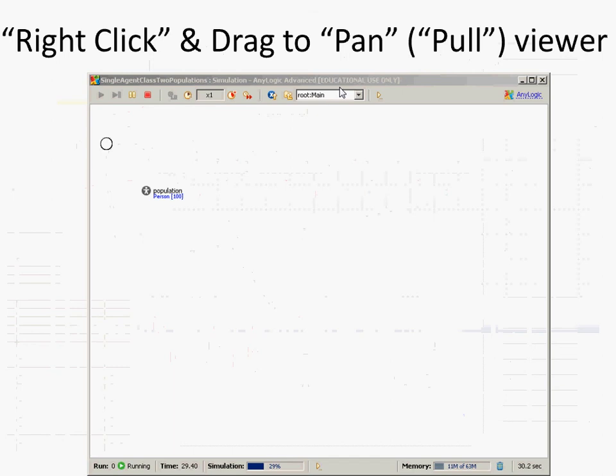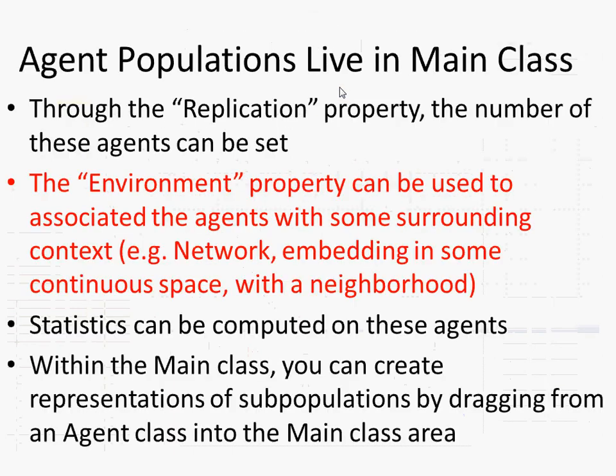Agent populations are living in the main class, and through the replication property, the number of agents can be set. That 100 I put in there is a Java expression — we could put in a variable there. We're now going to focus on the environment property and associate the main class with an environment. In general, there can be many environments; we'll just have one right now. In that environment, it's going to say something about the context in which these agents live.